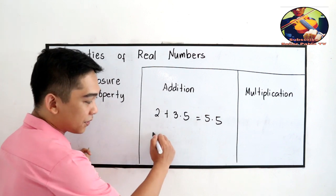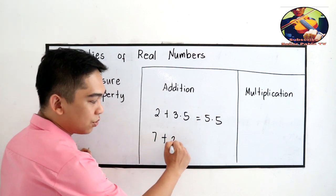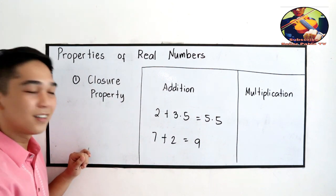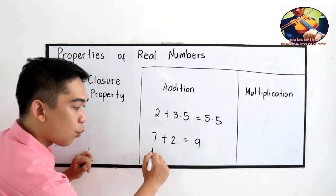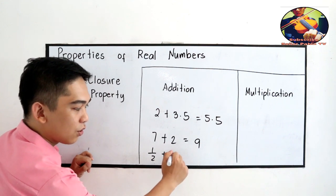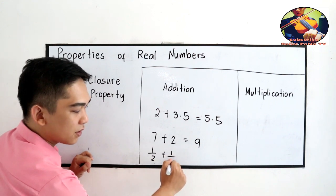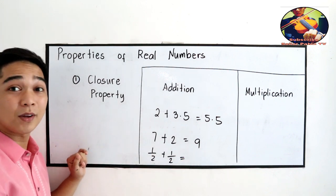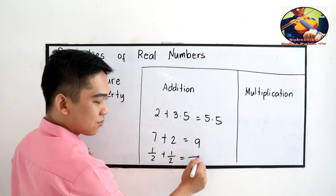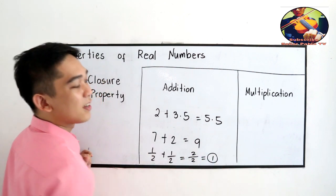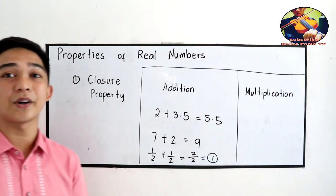Similarly, if we have 7 plus 2, that is 9. And if we have 1 half plus 1 over 2, that is 1 half plus 1 half. So 2 divided by 2, that is 1. Then it's also a closure property of addition.